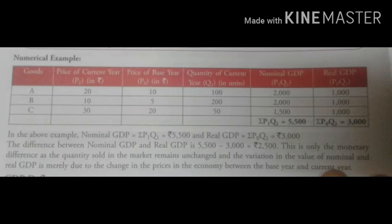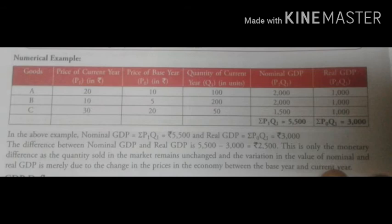In the above example, nominal GDP = 5500 and real GDP = 3000. The difference between nominal GDP and real GDP is 2500. This is only a monetary difference. The quantity sold in the market remains unchanged — whether base year or current year, quantity has not changed. The variation in nominal GDP is due to the change in prices between the base year and the current year. The difference occurred because current year prices differ from base year prices.